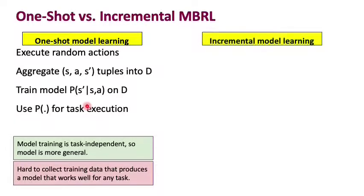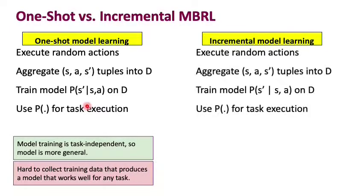There's another category of approaches which is more commonly used called incremental model learning, which looks very similar except that after using the model for task execution, at the beginning you might do a poor job because it's hard to collect training data like we said, but then once you have tried to use that learned model for task execution, you start producing some task-specific data.